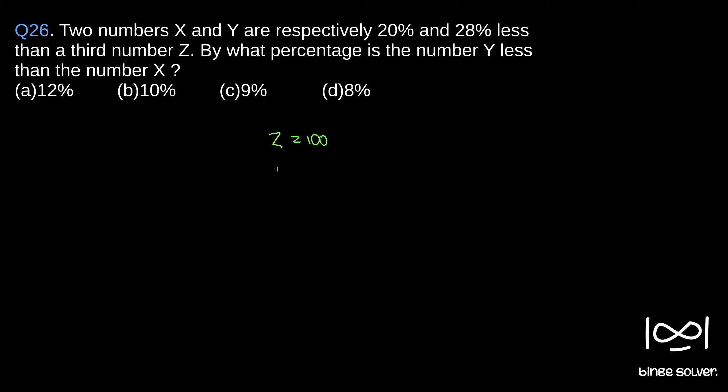X is 20% less than Z. Since we assumed Z is 100, 20% of Z is 20, so 20 less than 100 means 100 minus 20, which is 80. Similarly, Y is 28% less, so 28% of 100 is 28, so 100 minus 28 is 72.